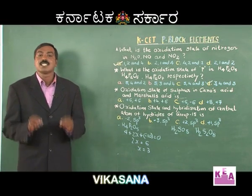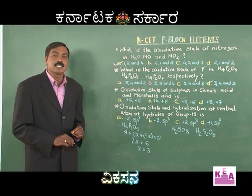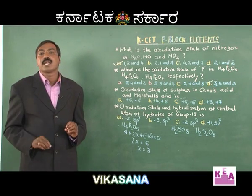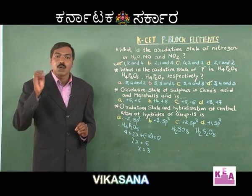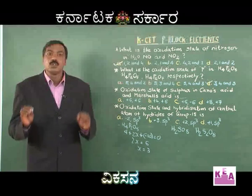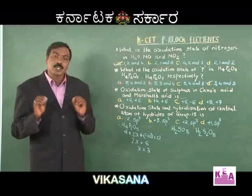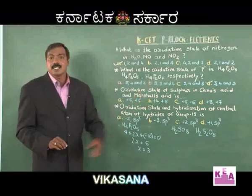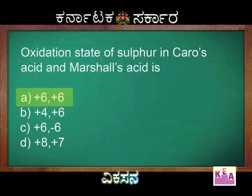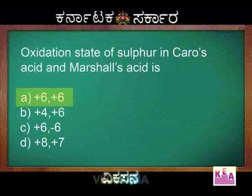This is a special case because both Caro's acid and Marshall's acid have a peroxy linkage (–O–O–). Therefore, get this directly into your head: the oxidation state of sulfur in both Caro's acid and Marshall's acid is +6 and +6 only. Do not be fooled by the option that gives +8 and +7 from the standard calculation. Always go with +6 and +6.